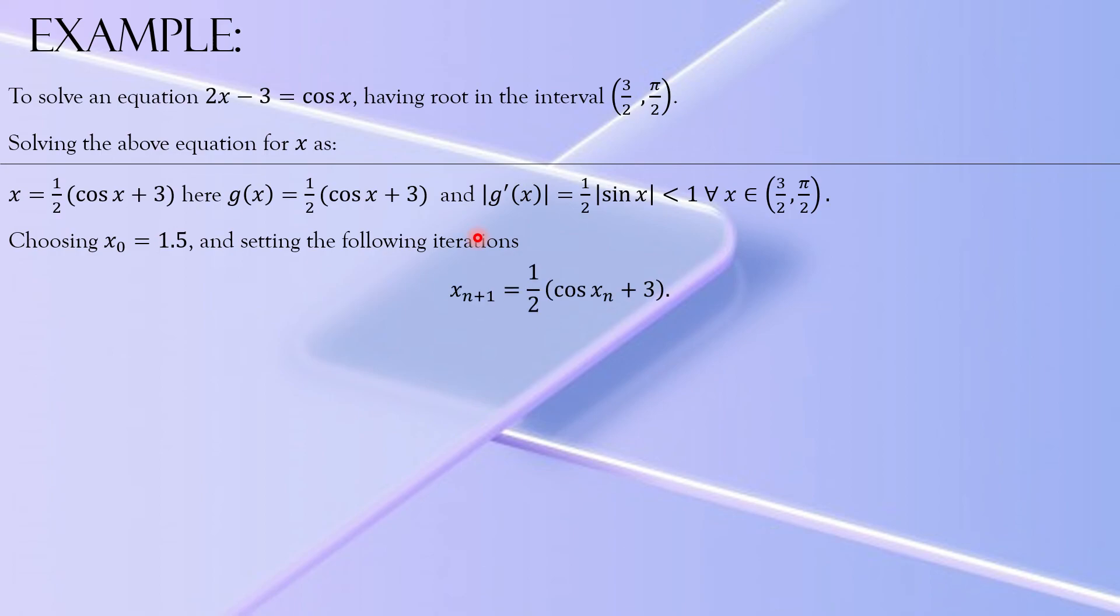Then we set the following iterations: x_{n+1} = 1/2(cos(x_n) + 3), where n = 0, 1, 2, 3, 4 and so on. Let's start with n = 0. If you take n = 0, you will get x₁ = 1/2(cos(x₀) + 3), and we have chosen x₀ to be 1.5, so cos(1.5) plus 3 dividing by 2 would give you 1.5354.